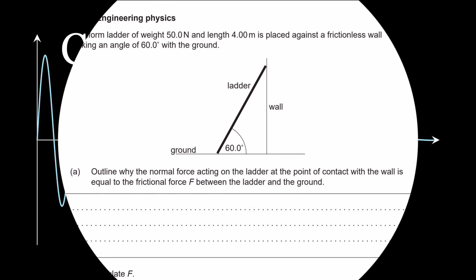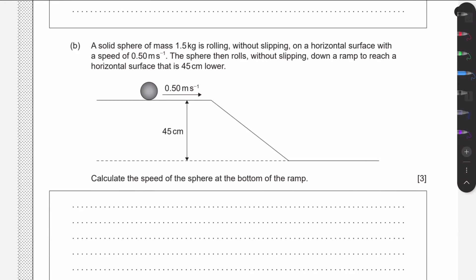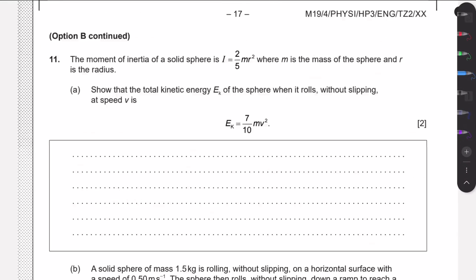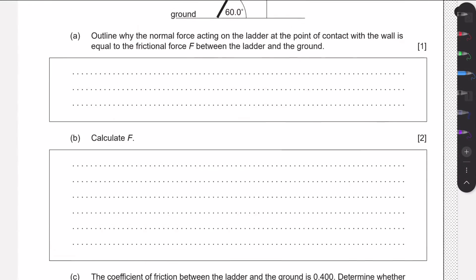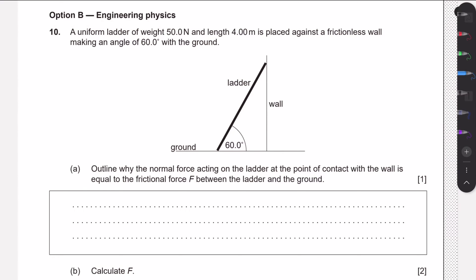Hello guys, welcome to this new video. In this video we'll go through two questions from the May 2019 Time Zone 2 Paper 3. One of them is about a ladder and the other one is going to be about a rolling ball down a hill. This first question tells us that we have a uniform ladder.